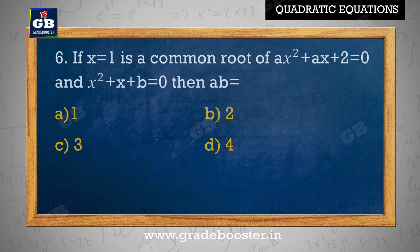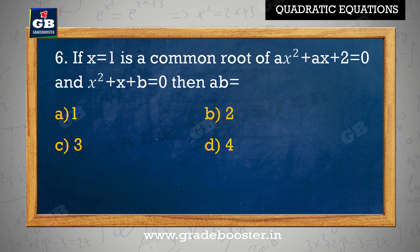If x equal to 1 is a common root of ax square plus ax plus 2 equal to 0 and x square plus x plus b equal to 0, then ab equal to: A. 1, B. 2, C. 3, D. 4.